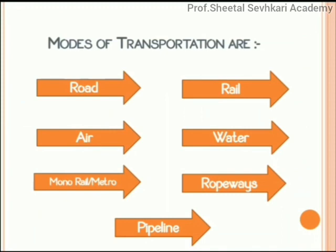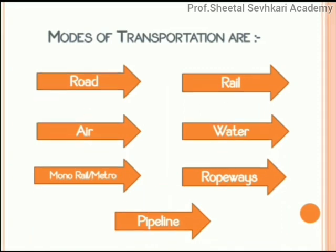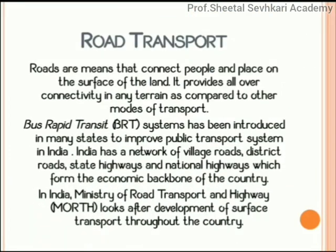There are six modes of transportation: road, railways, airways, waterways, monorail, metro, ropeways, and pipeline. Let us begin with roadways. Roadways come under land transportation, which is divided into roadways and railways. Roads are means that connect people and places on the surface of the land.